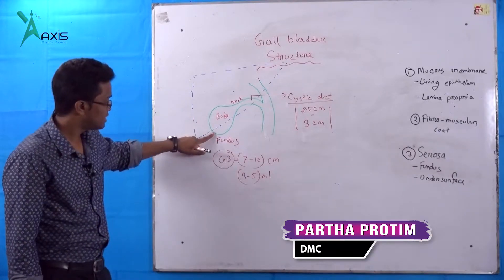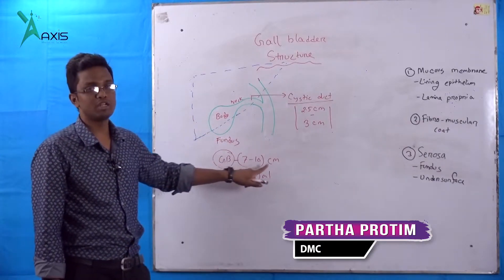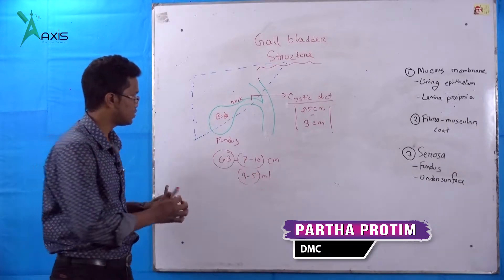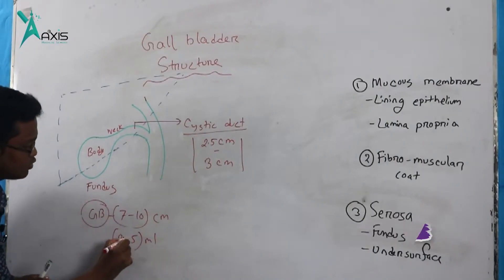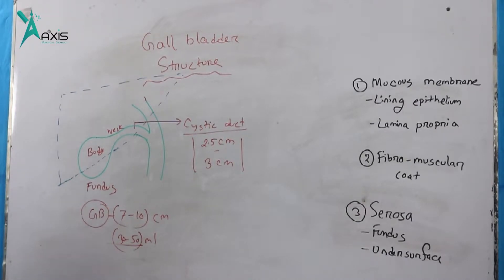The gallbladder is 7 to 10 cm and the capacity is 30 to 50 ml.